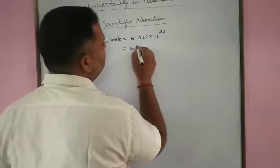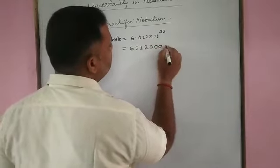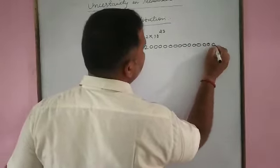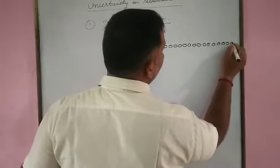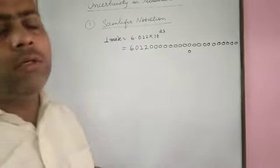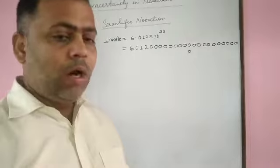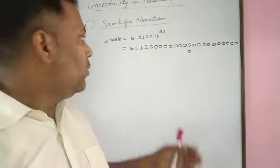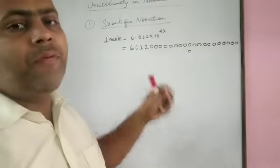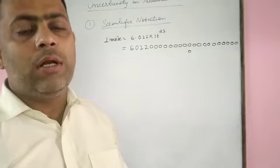Writing out 6.022 followed by all 23 digits is quite difficult. That means to write the number of particles in one mole is very tedious. In order to avoid such difficulty, we are going to represent such large numbers in the form of scientific notation.